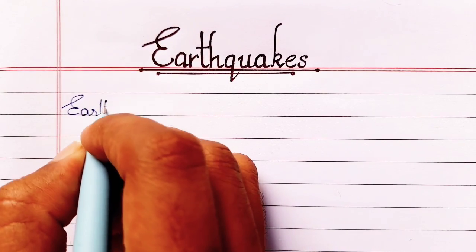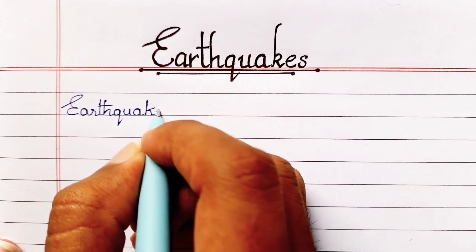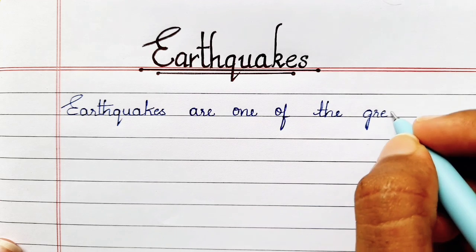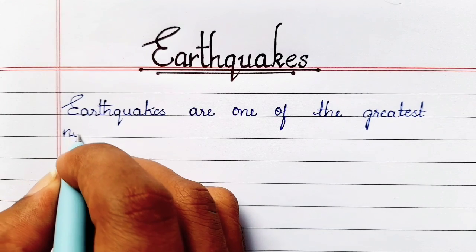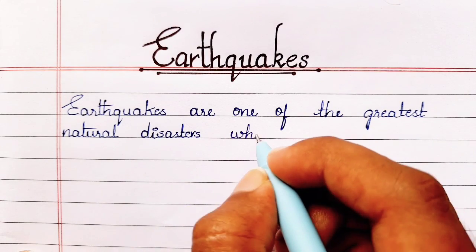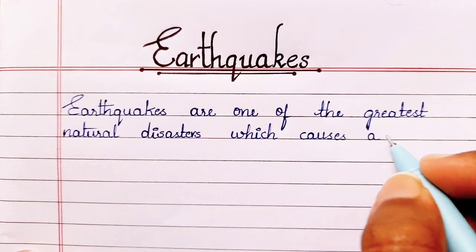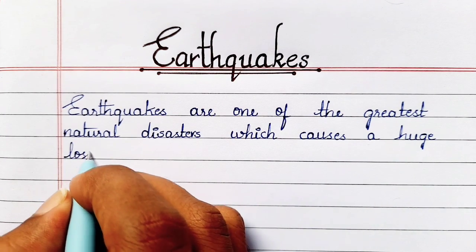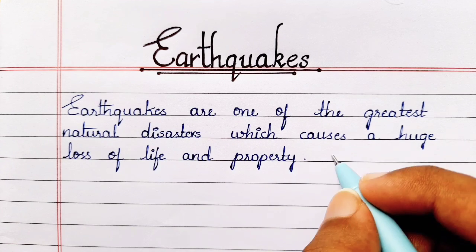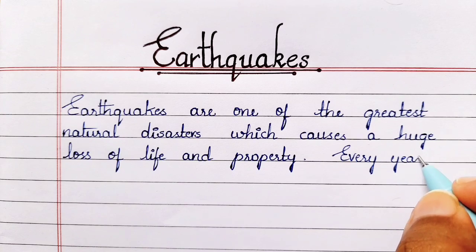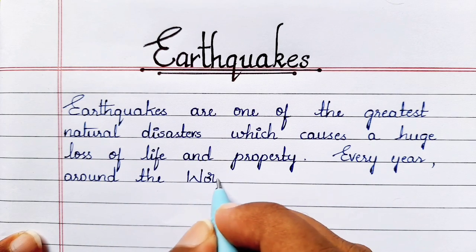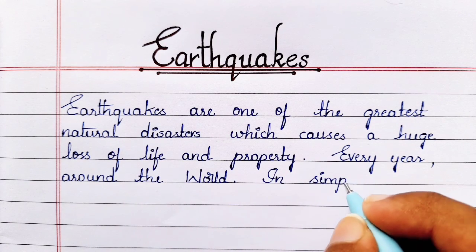Hello everyone, welcome back to my channel. Today in this video I'm going to give a brief note on earthquakes — its causes, earthquake waves, types of earthquakes, and their effects. I hope this video will be useful for some people. We all know that natural disasters occur everywhere and every time, and earthquakes are one of the greatest natural disasters which causes a huge loss of life and property every year around the world. In simple words, earthquake means shaking of the earth.